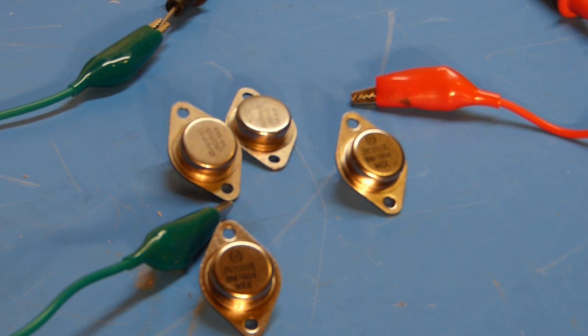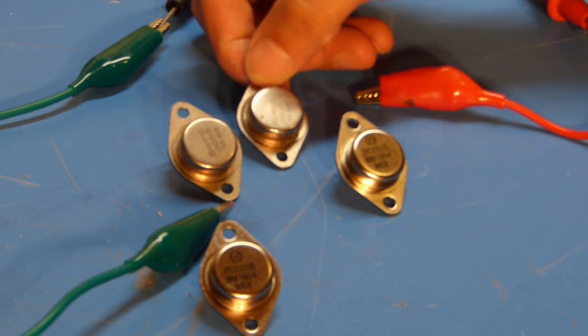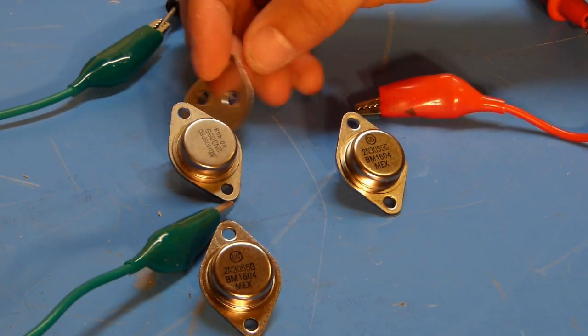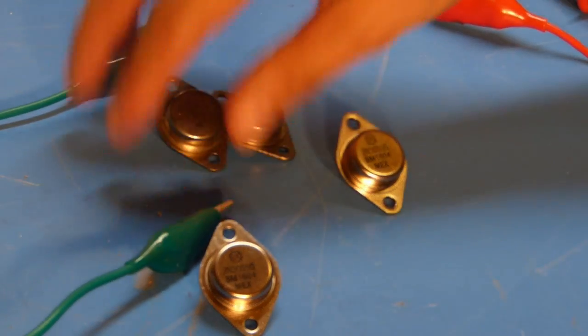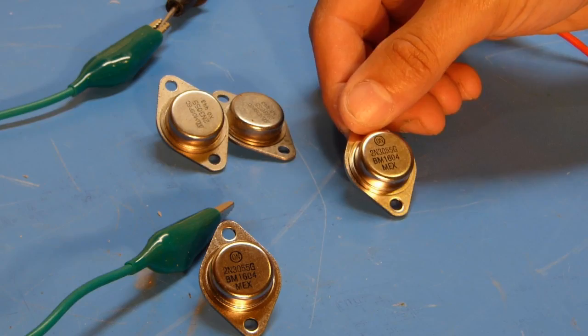On the bench today I have some 2N3055 power transistors. These transistors in the back are the old ones. These came out of an old power supply that I'm working on and these are the new replacements here.